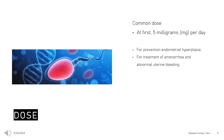Dose — For prevention of endometrial hyperplasia: Adults, at first, 5 mg per day. Your doctor may adjust your dose as needed. However, dose is usually not more than 10 mg per day. It is usually taken every day for 12–14 consecutive days per month.